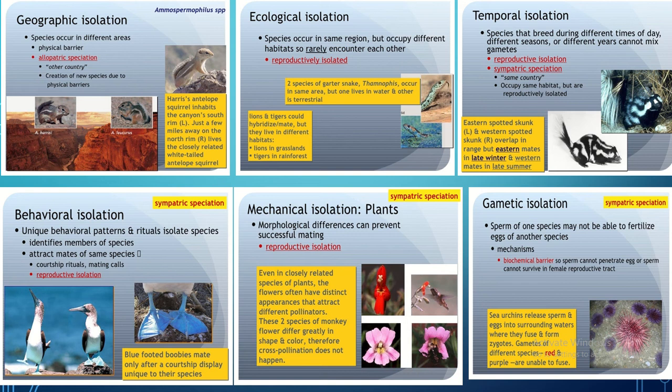Temporal isolation occurs when organisms adopt different breeding seasons. The example is the eastern and western spotted skunk: eastern skunks mate in late winter whereas western skunks mate in late summer. Due to different breeding seasons they do not interbreed, and after some time they are reproductively isolated and converted into two different species of spotted skunks.